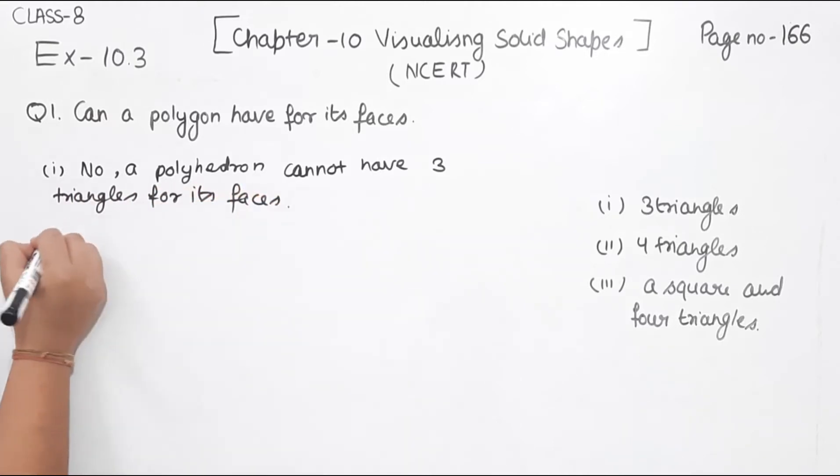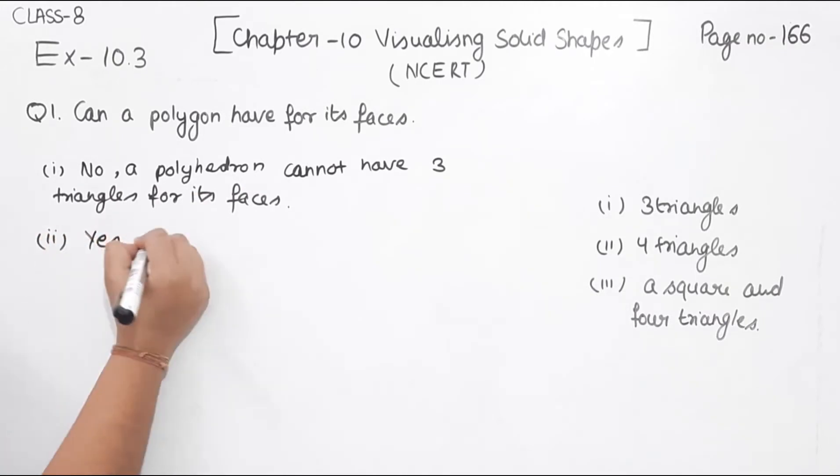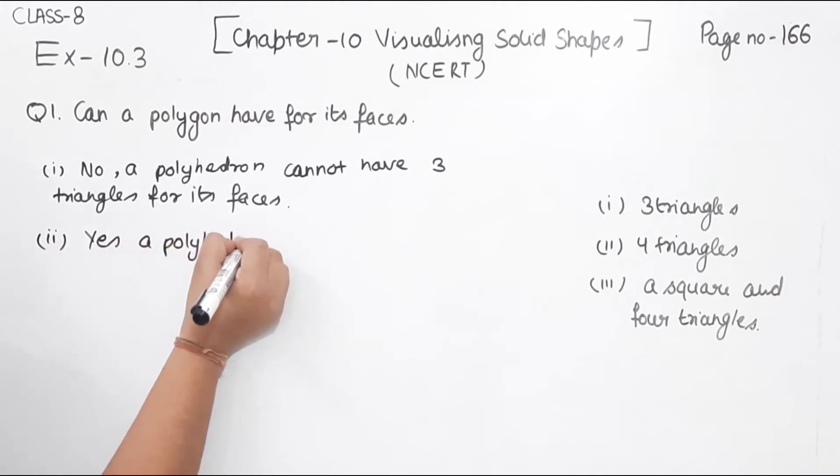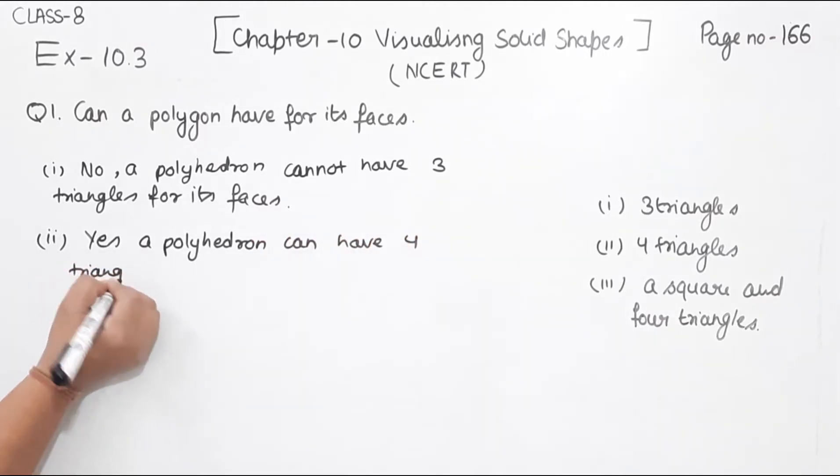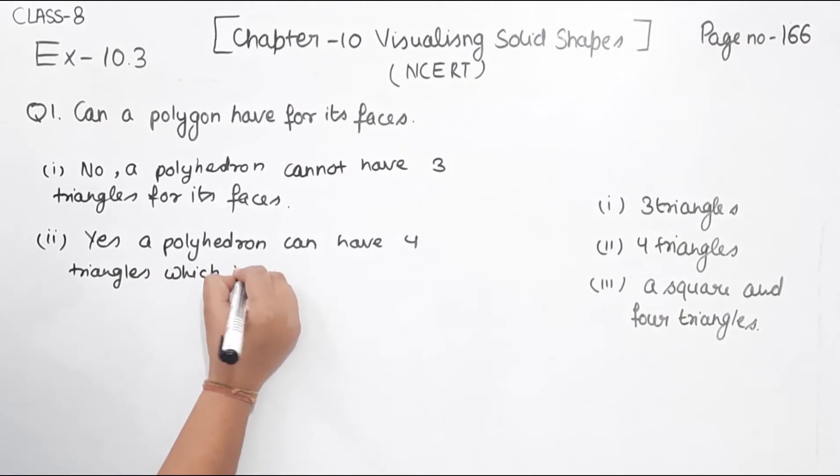Now comes to the second one. In this one, we have four triangles. So yes, a polyhedron can have four triangles, which is the pyramid.